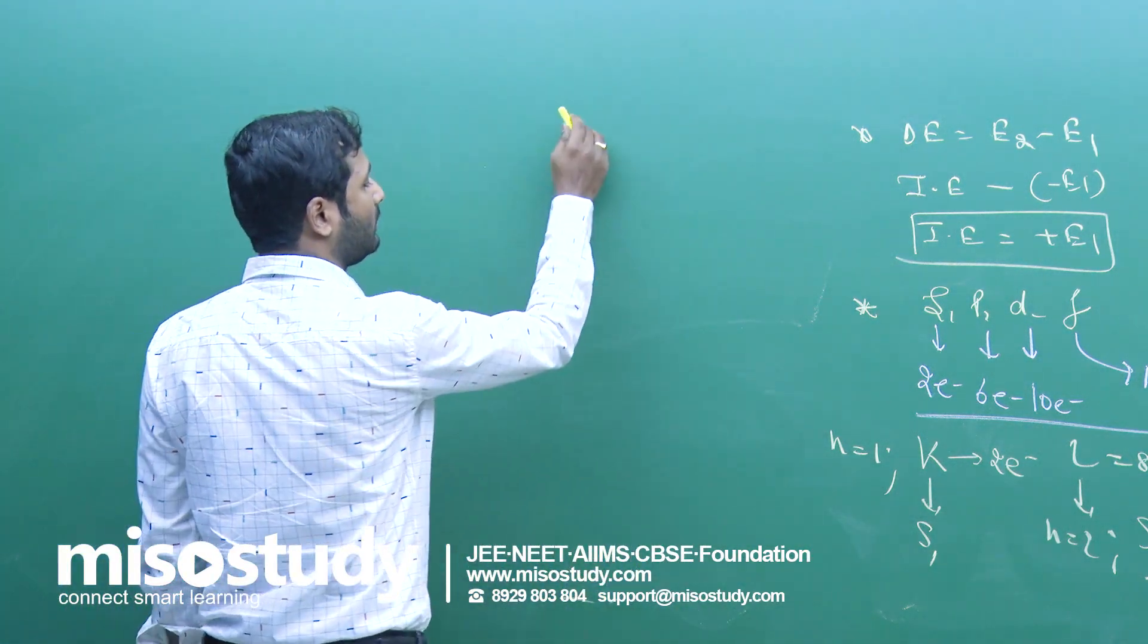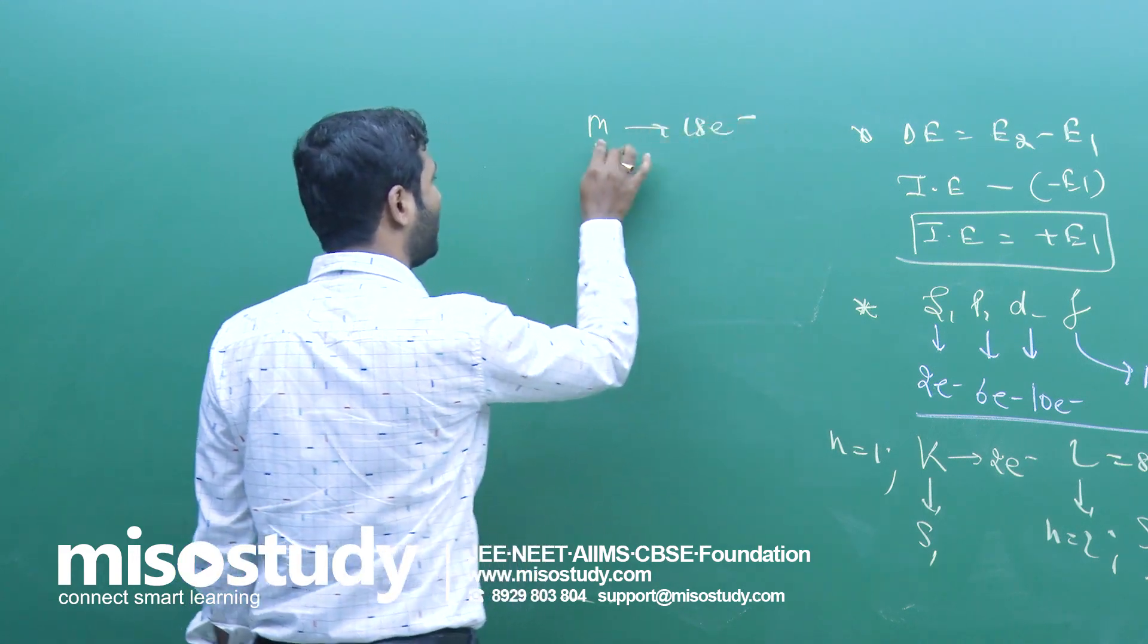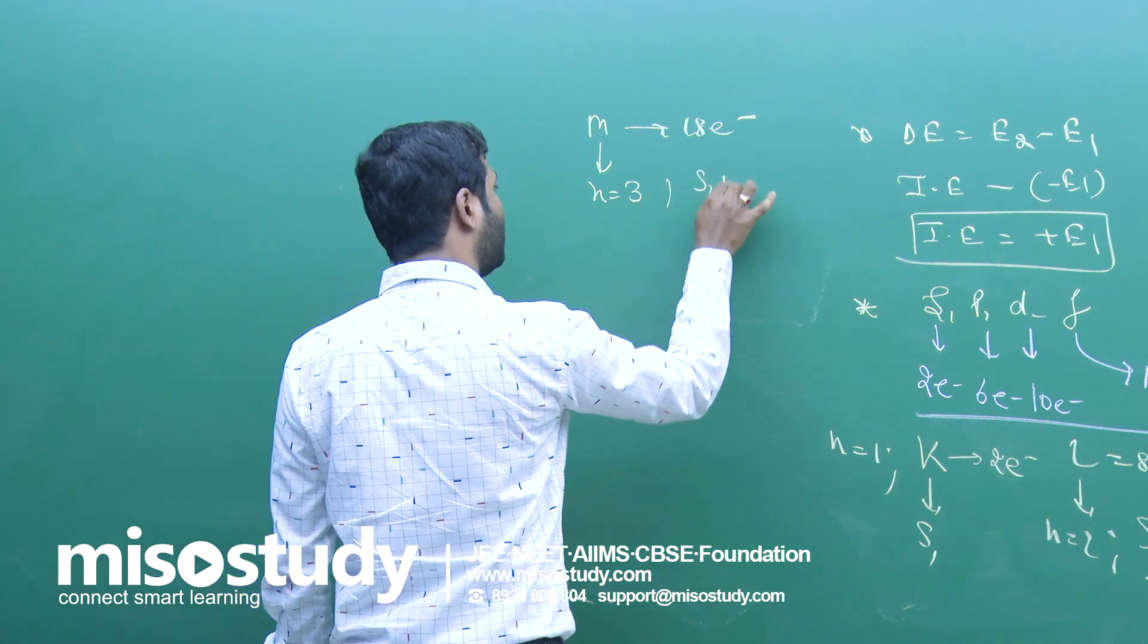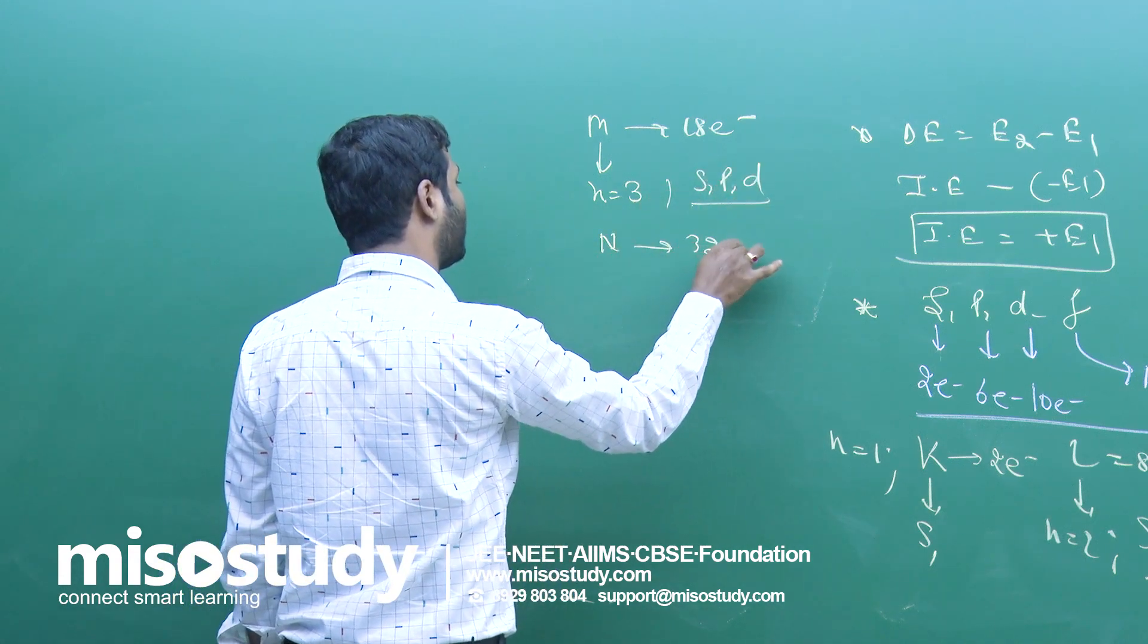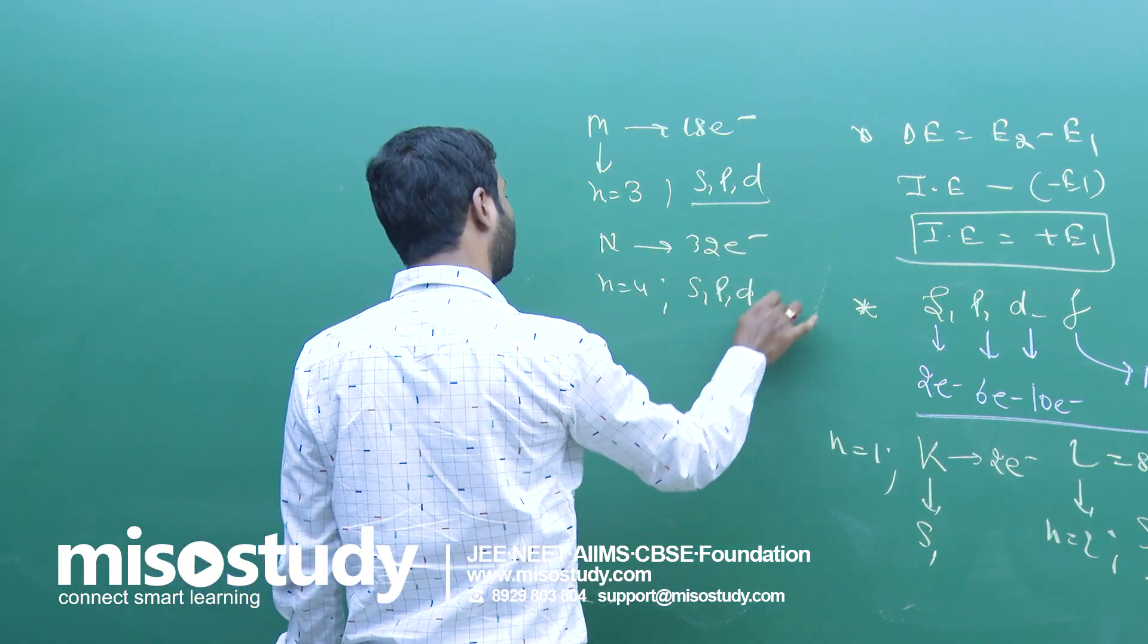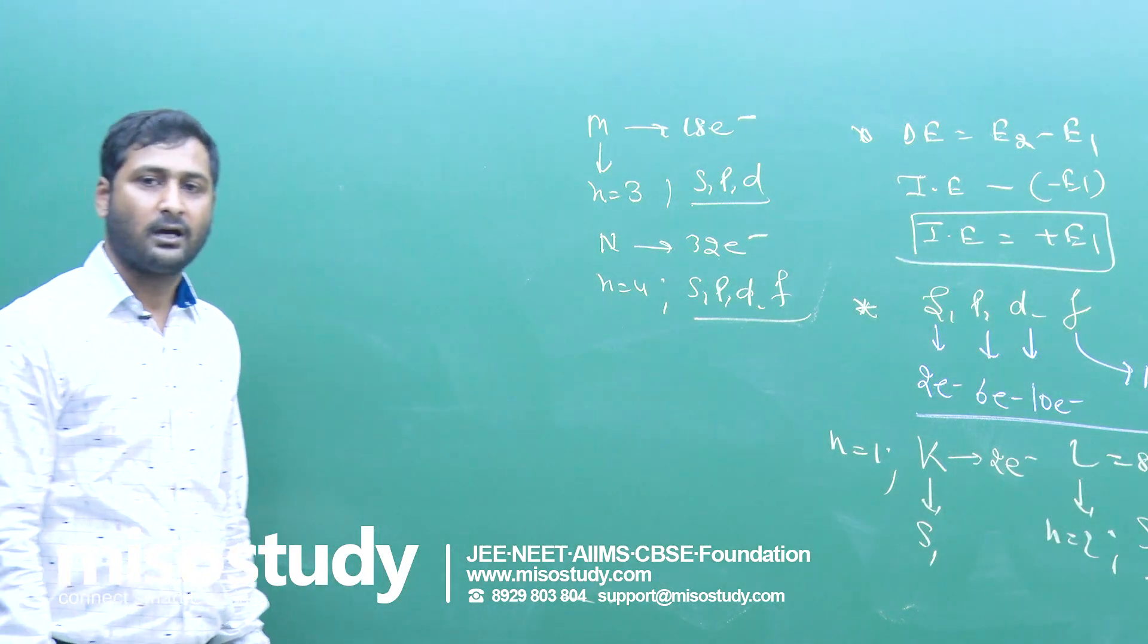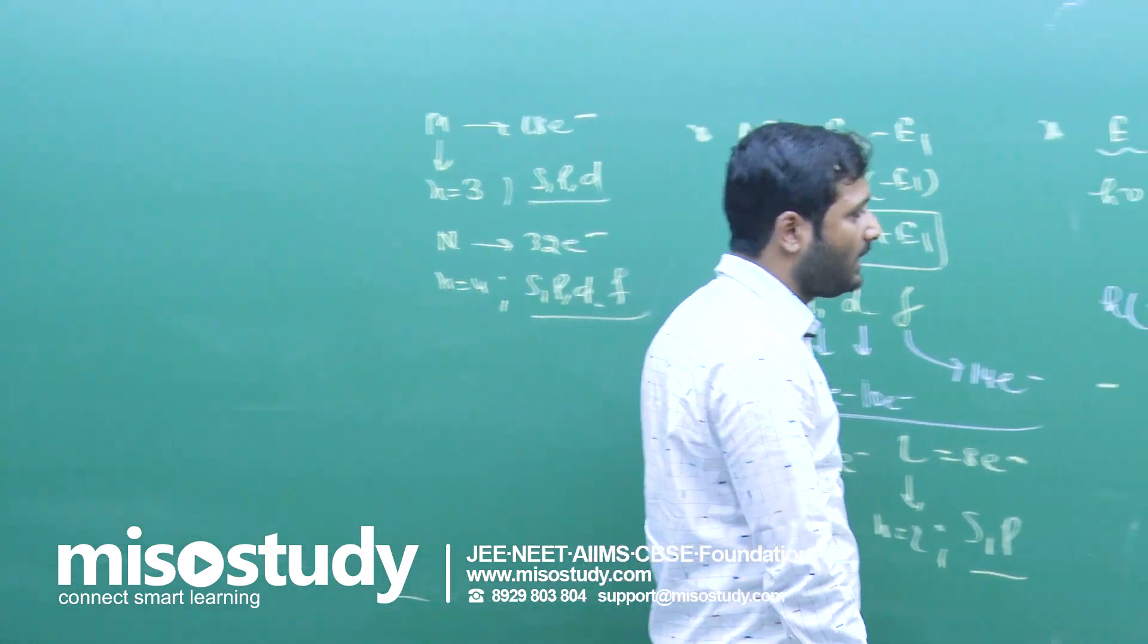M has 18 electrons and in this case n equals 3, so it will have 3 sub-shells S, P, and D. N has 32 electrons, n equals 4, so it will have 4 sub-shells S, P, D, and F. Similarly, by using this, we can also write the electronic configuration. These are the simple things we generally use in atomic structure.